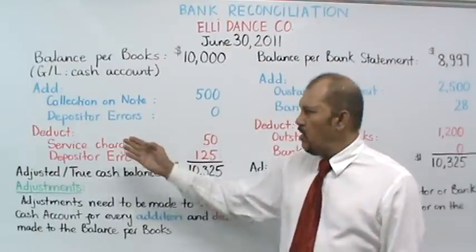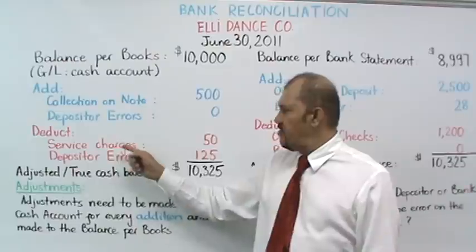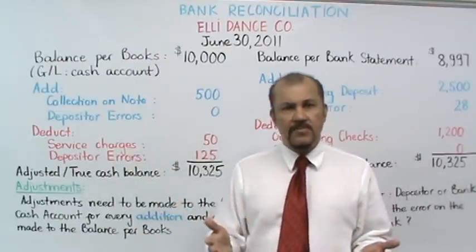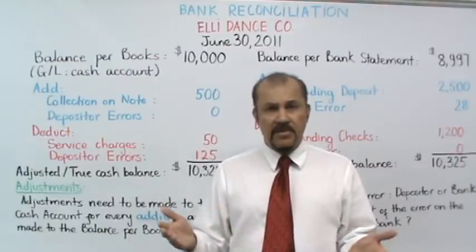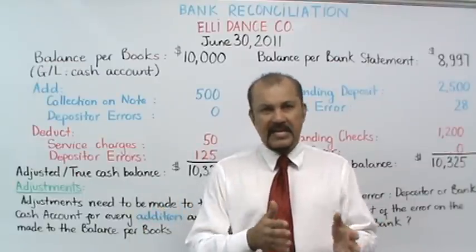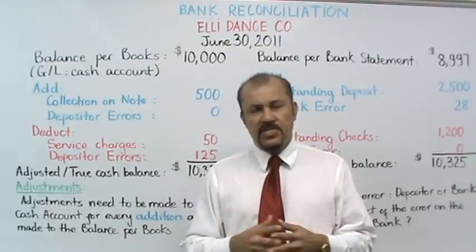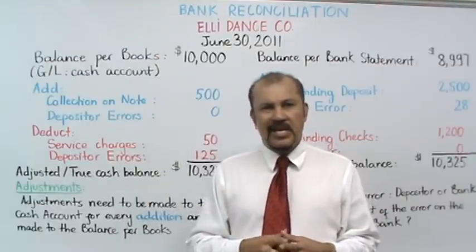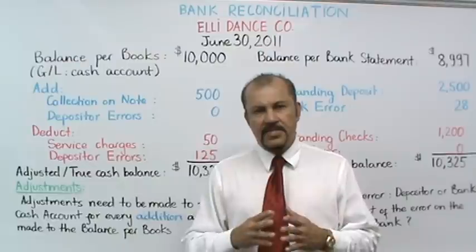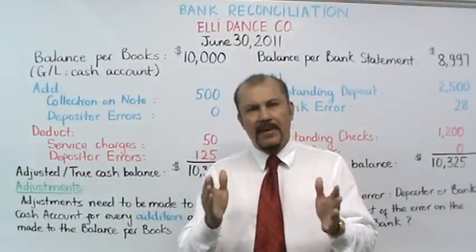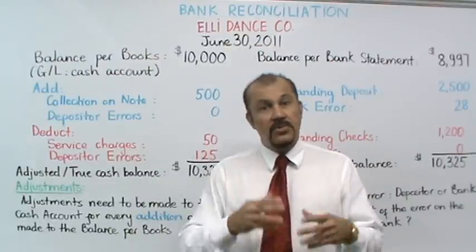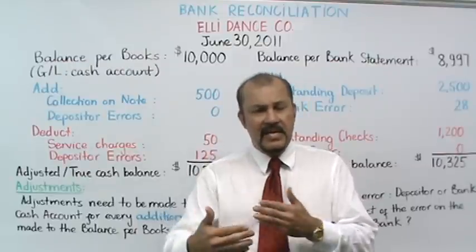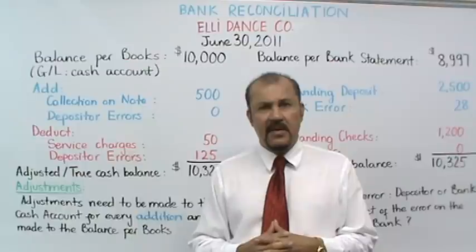Next, we'll look at the deductions. We have service charges of $50. Banks oftentimes will charge customers for the privilege of maintaining a bank account and providing services. In this case, the bank is charging Ellie Dan's company $50. Now, how does the bank get their $50? Do they send Ellie an invoice and then does Ellie cut a check to the bank for $50?